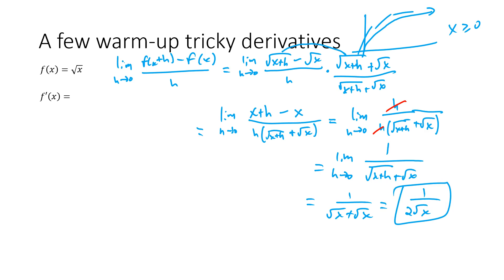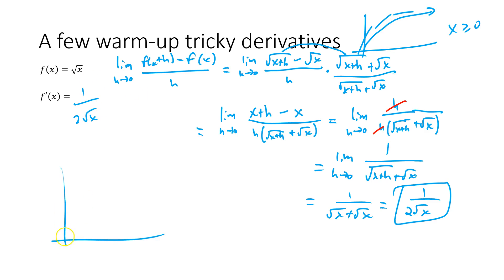So the derivative of √x is 1/(2√x). It's always positive for x > 0. As x gets bigger, 1/(2√x) gets smaller — the slopes get shallower and shallower as you move along the square root curve, which matches its shape perfectly.